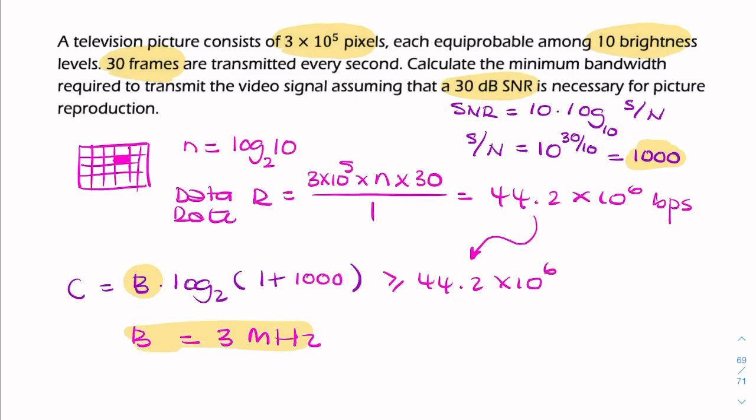So that's the necessary bandwidth. So in order to be able to transmit 300,000 pixels per frame at 30 frames per second with 10 gray levels or 10 colors, you would require a bandwidth of 3 megahertz.